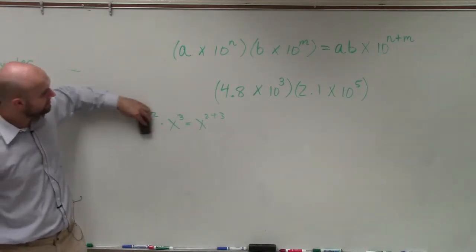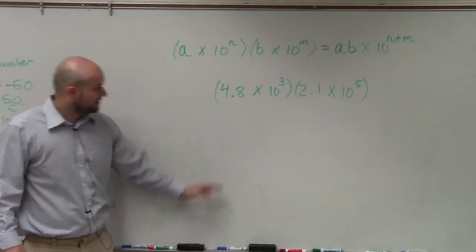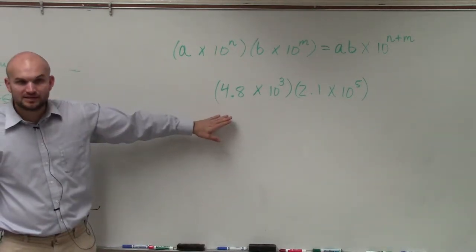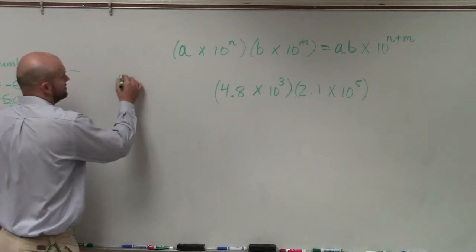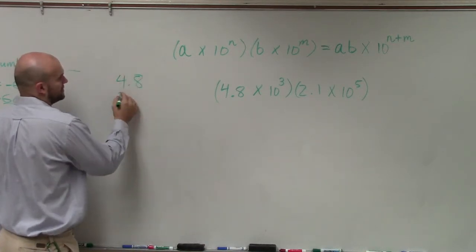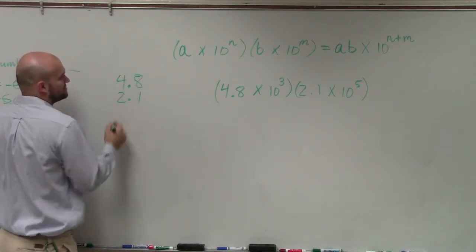So in this problem, basically what I need to do is I need to first multiply these two numbers. So I'm going to do that the long way, because I'm not going to have a calculator. So I'll do 4.8 times 2.1.